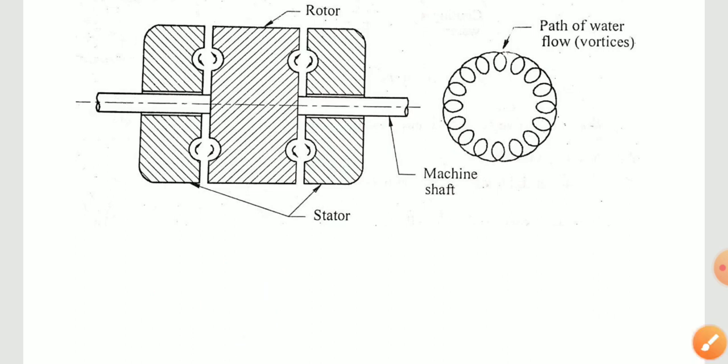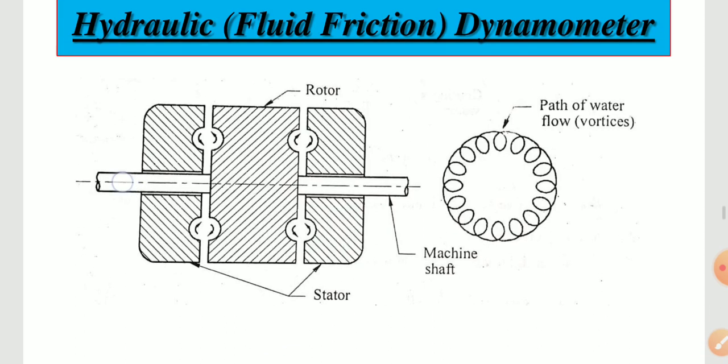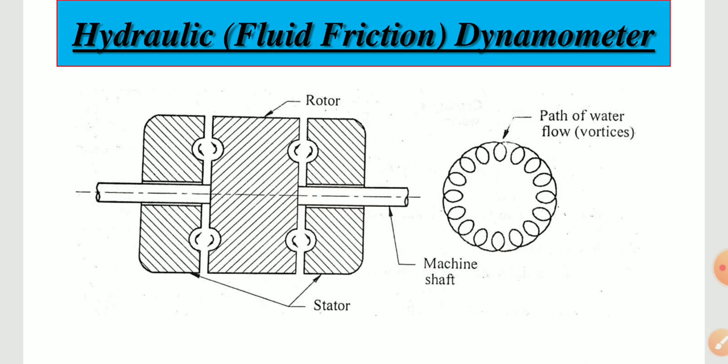The hydraulic dynamometer may be used for power up to 20,000 kilowatts and speeds up to 10,000 RPM. Advantages include: it can be used for high power measurement at high speed; water supplied serves two purposes — providing braking action and cooling; and it has high absorption capacity in a small space at low cost.